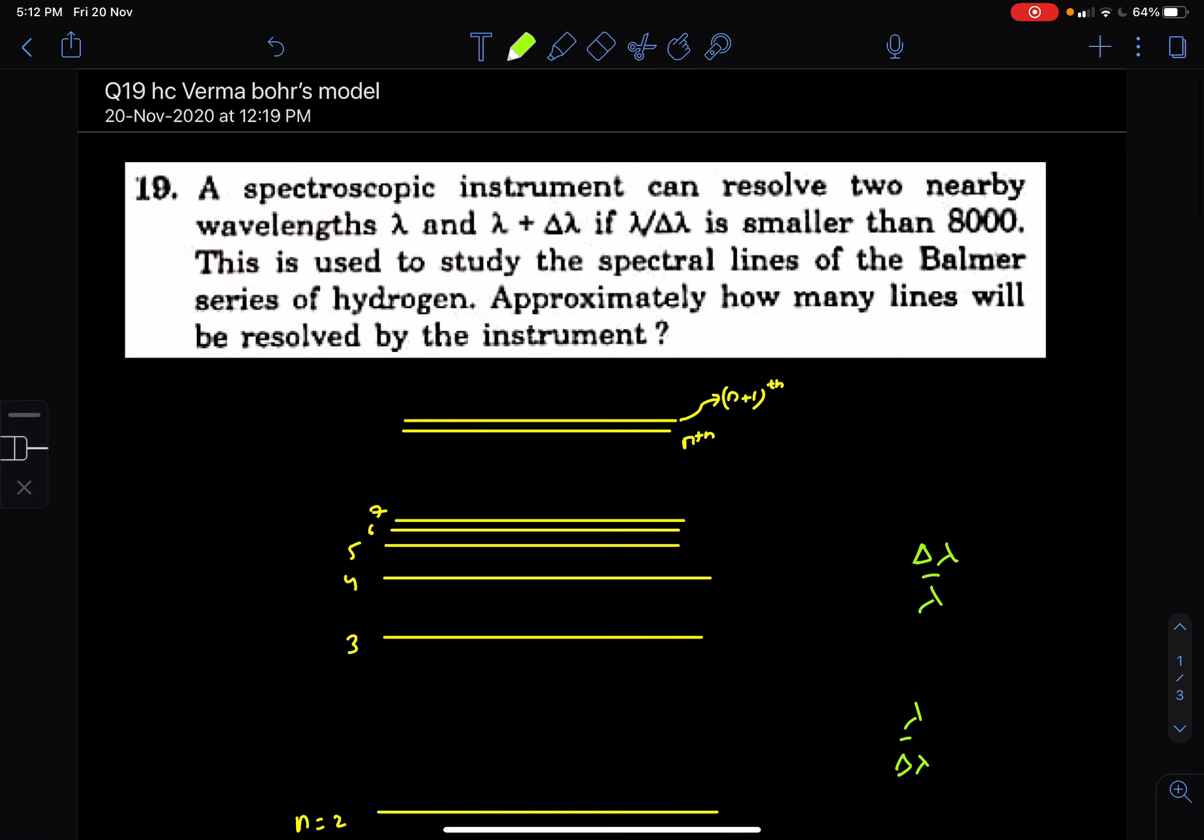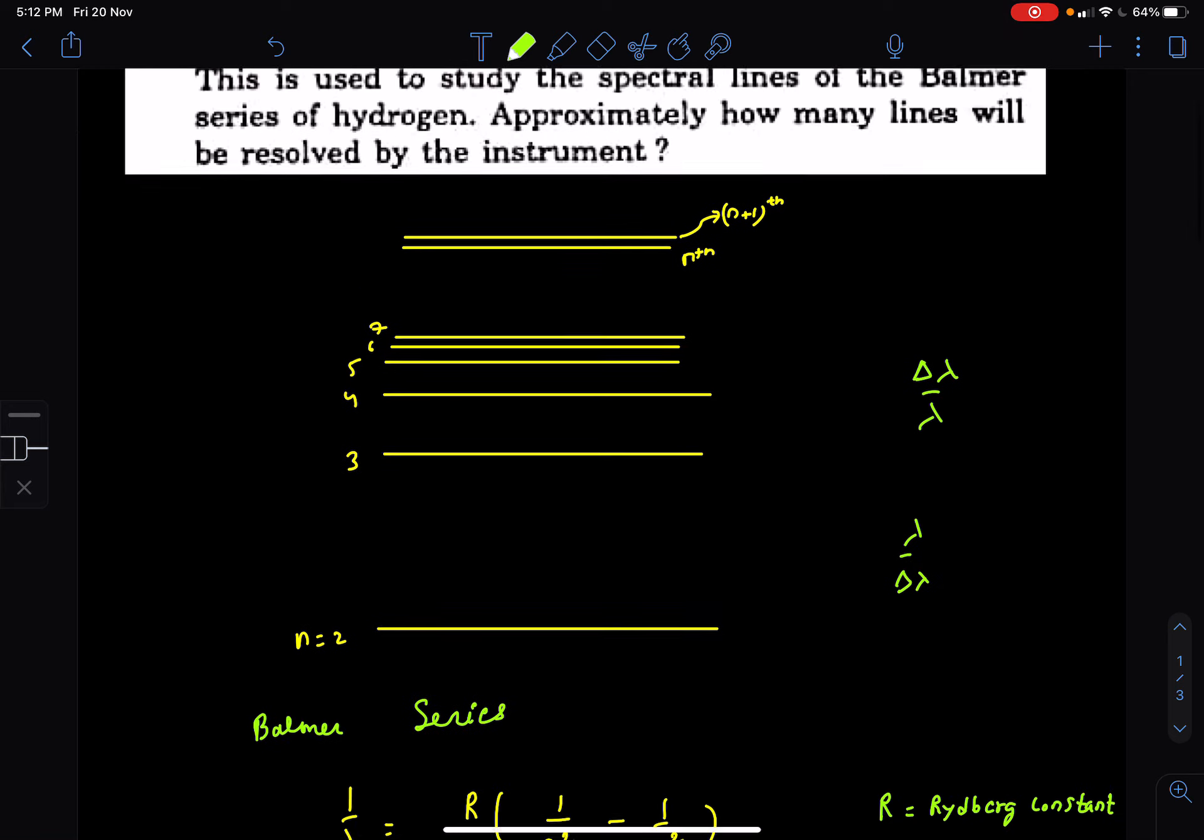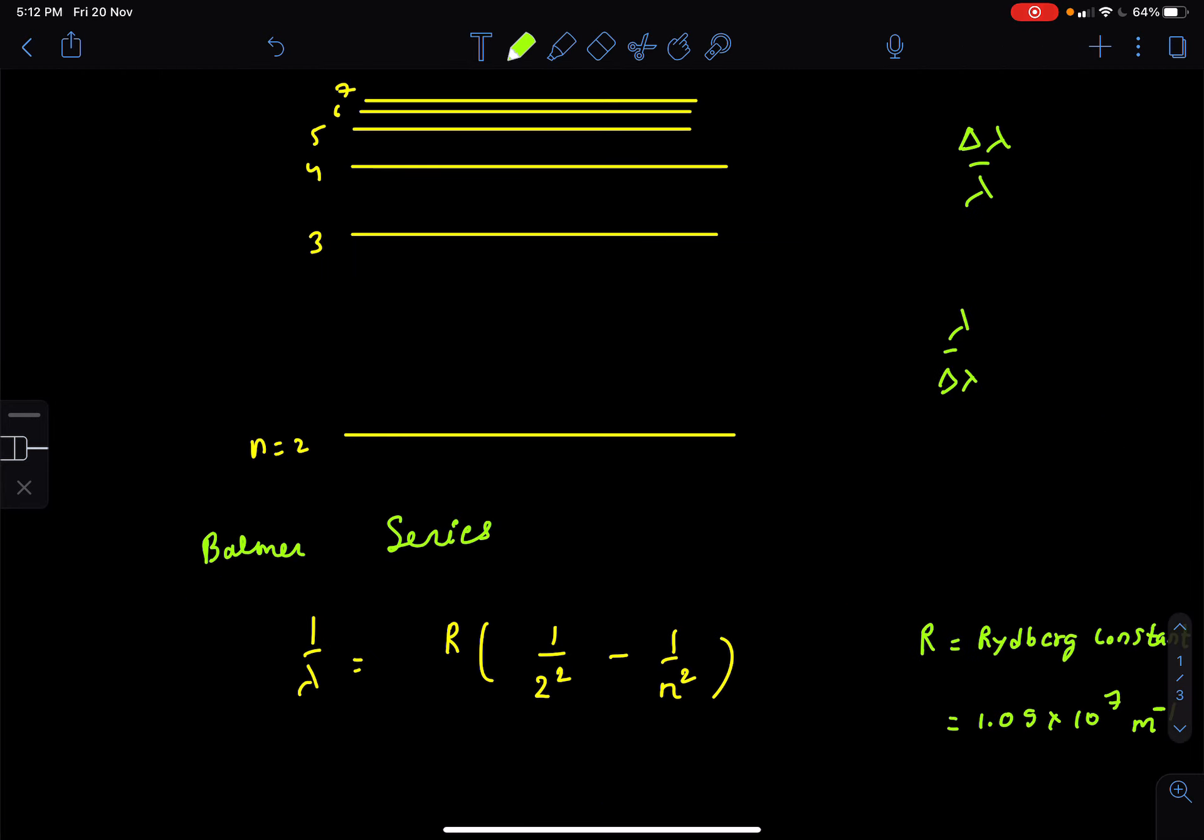Okay, so this is question number 19 from H.C. Verma Bohr's model. We are talking about Balmer series. Balmer series means final is n equal to 2.